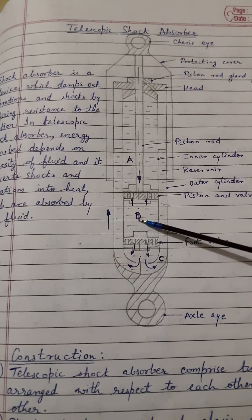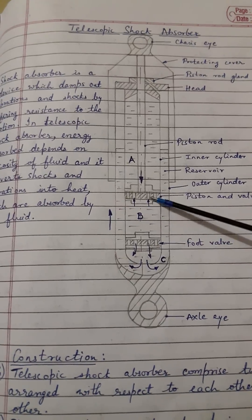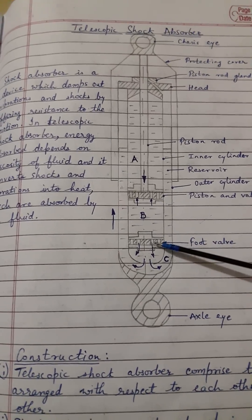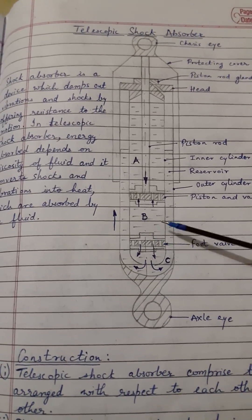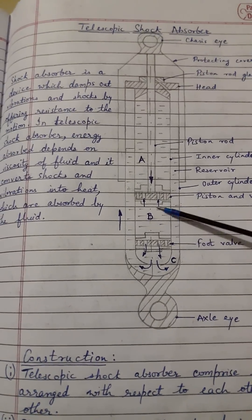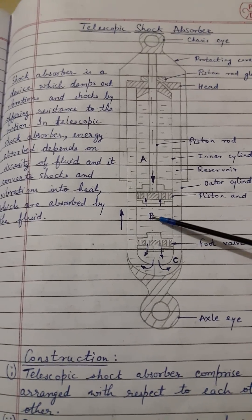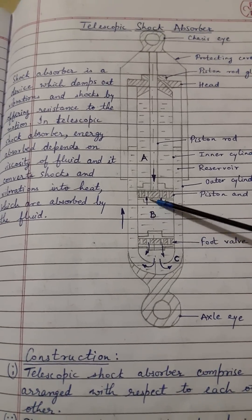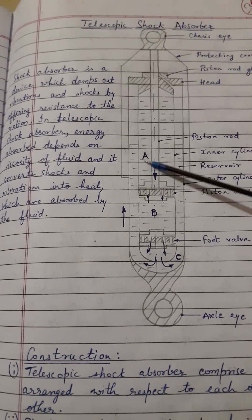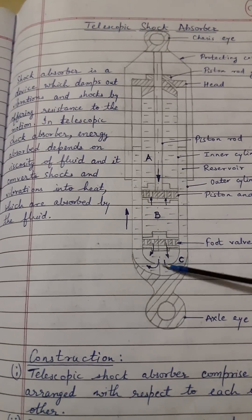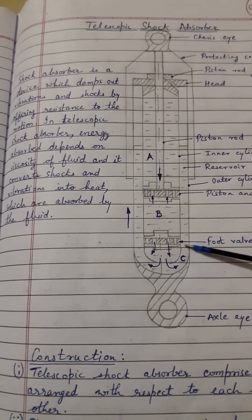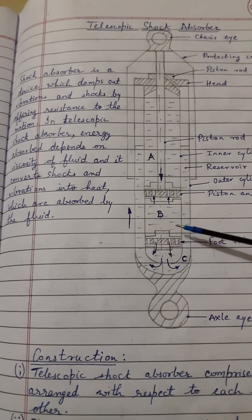The valve at the piston and foot valve opens, so the fluid in chamber B moves through the openings or holes to chamber A, and also moves to the annular space C.